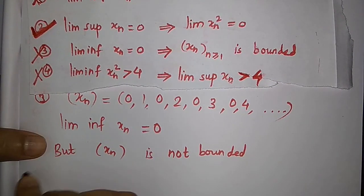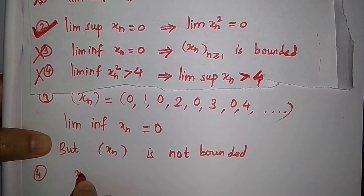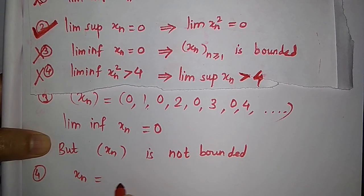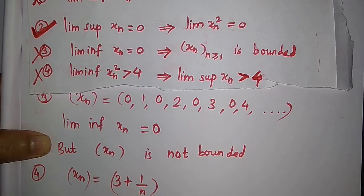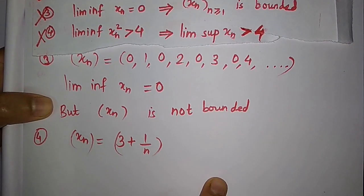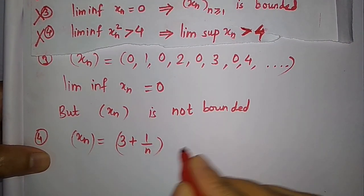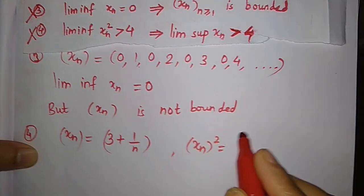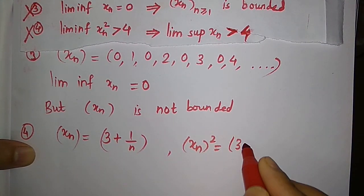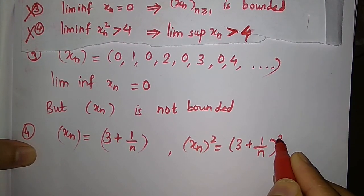For the fourth option, the counter-example is xn = 3 + 1/n. Then xn² = (3 + 1/n)², which serves as a counter-example to disprove the fourth option.